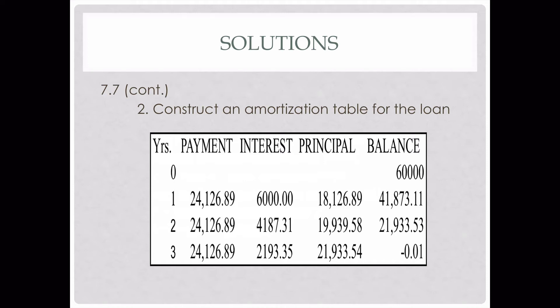Principal reduces our balance, so we subtract $6,000 by our principal. $6,000 minus $1,812.89 is $4,187.11. To review: the interest is the interest rate multiplied by the balance, the principal and the interest equal the payment, and the balance is reduced by the principal.